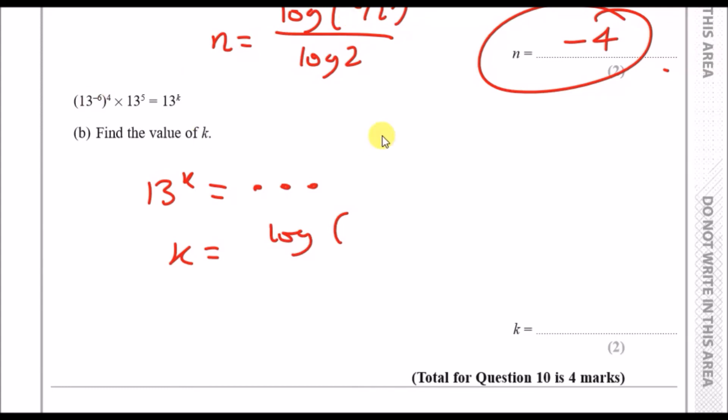You can just say k equals the log of everything that was on the left side. So 13 to power negative 6 times 13 to power 4 times 13 to power 5, all of this over log 13. So 13 to power 5 over log 13, and you should get minus 19. Yeah, it works.